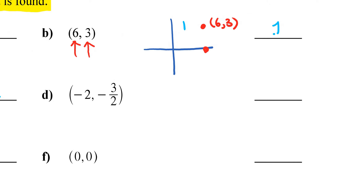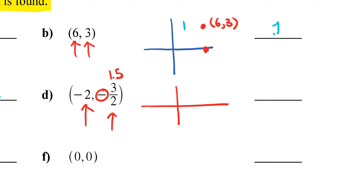For letter D, you go left 2 and down 3 — so down 1.5 units. If I go left 2 units and down 1.5, that's quadrant 3.